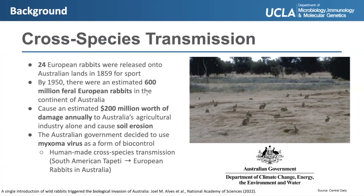In response, the Australian government started funding biocontrol initiatives, including hunting, trapping, and fencing, but these were all largely ineffective despite killing lots of rabbits. Then researchers discovered in a laboratory setting that myxoma virus extracted from South American tapetes could infect European rabbits and was actually highly lethal in them. So in this case, cross-species transmission was actually human-made.